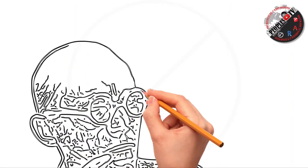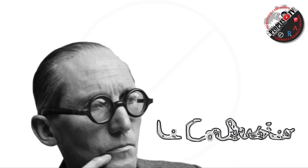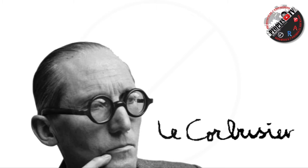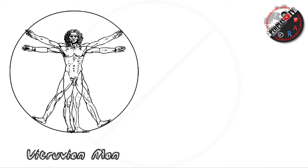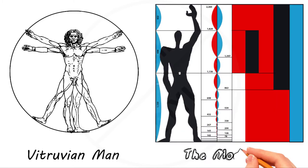Le Corbusier, a very famous architect, tried to improve on the proportional perfection of the Vitruvian man of Leonardo da Vinci with his own invention, the Modular Man. And further, that became the basis of his architectural theories and design.